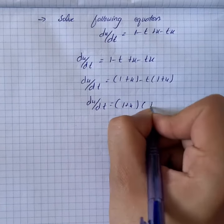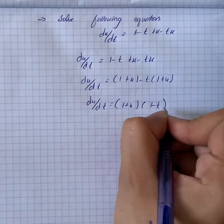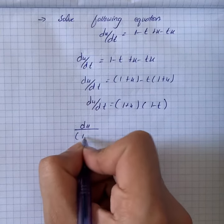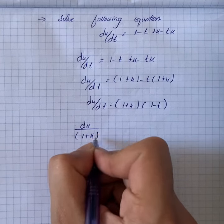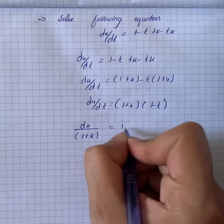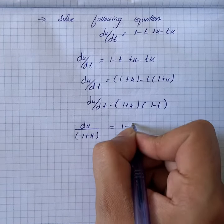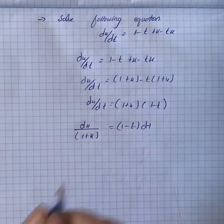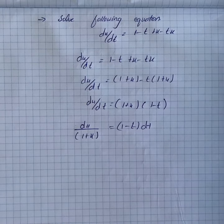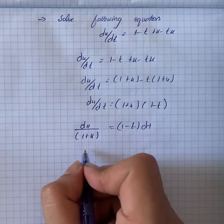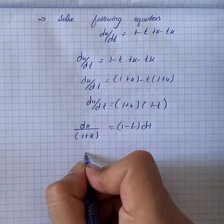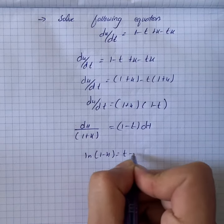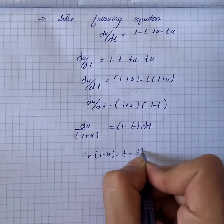Separating variables, we get dx/(1 + x) = (1 - t) dt. Applying integration to both sides gives log(1 + x) = t - t²/2 + c.